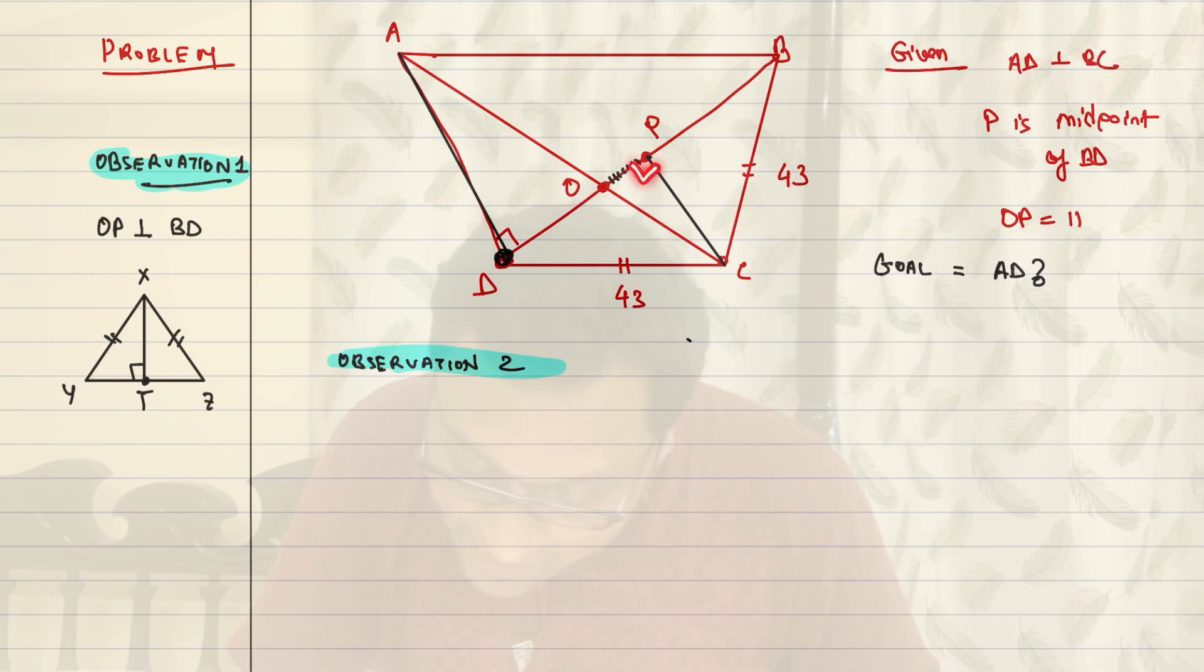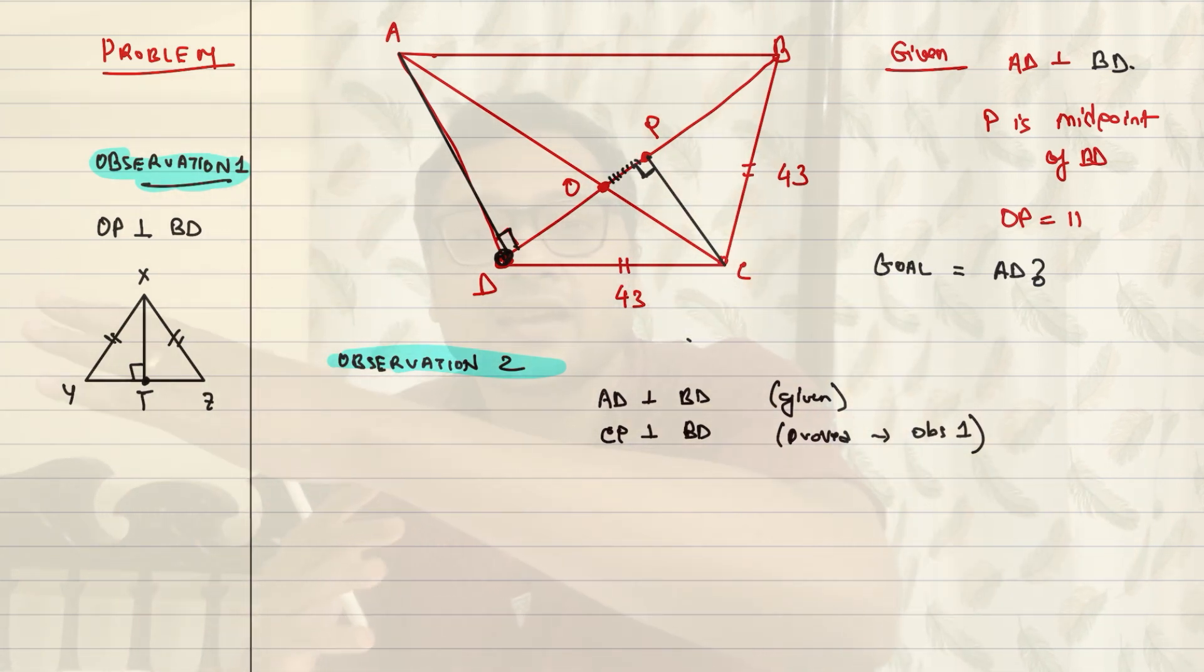CP is perpendicular to BD. And AD is perpendicular to BD, that is given. Both of these lines are perpendicular to the same thing. This, my friends, is a very important fact or an observation. That if this happens, if two lines are perpendicular to the same line, then they are parallel to each other. These two lines are parallel to each other.